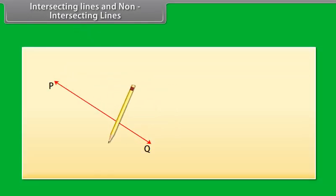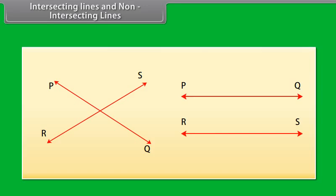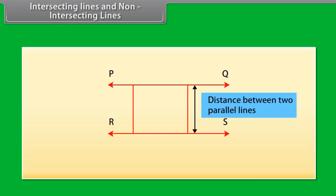Now let us draw two different lines, PQ and RS, on a paper. We can draw them in two different ways. These are intersecting lines and these are parallel lines. The length of the common perpendiculars at different points on these parallel lines is the same. This equal length is called the distance between two parallel lines.